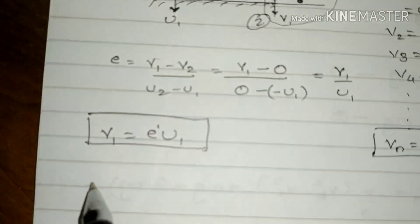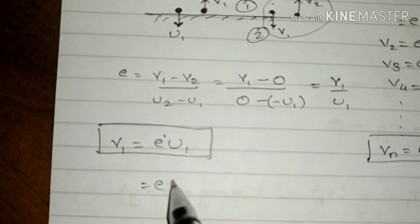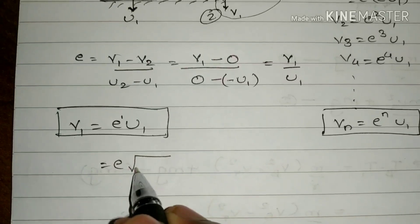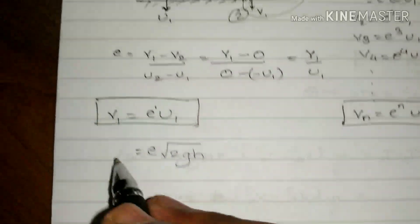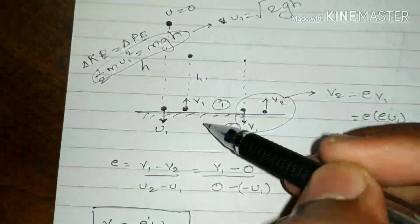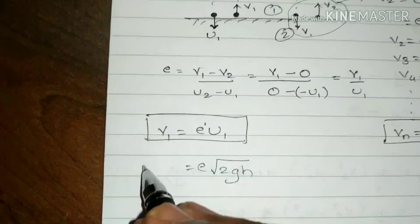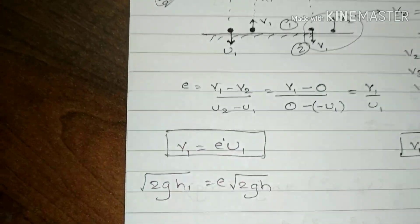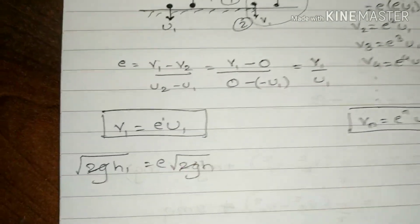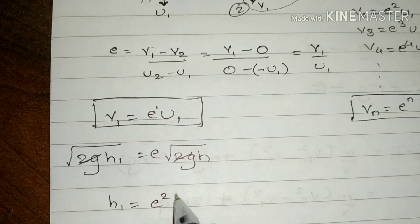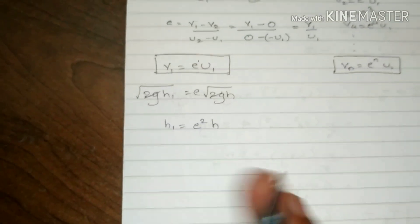Applying that expression: e is kept as it is, and instead of u1 I write √(2gh). Similarly, v1 and h1 are related by the same concept — loss of kinetic energy equals gain in potential energy — giving v1 = √(2gh1). When you do the cancellations, you get h1 = e² × h. So this will be the height after the first bounce.